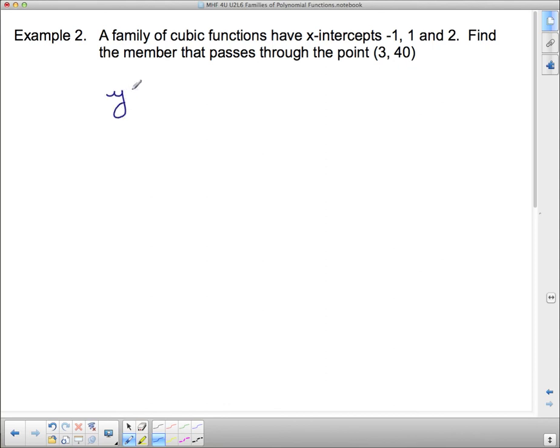So we'll start by saying that this has y equals k. We don't know what k is. We don't need to know k for the family. Then we have (x + 1), (x - 1), and (x - 2) coming from these three zeros.